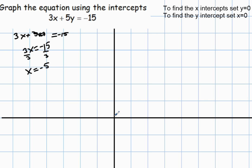So there's an x-intercept at negative 5: 1, 2, 3, 4, 5. Now we need the y-intercept.